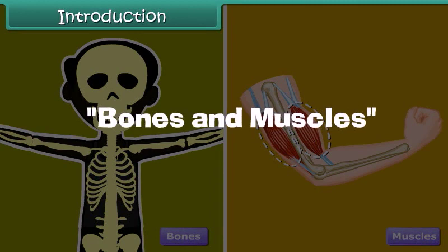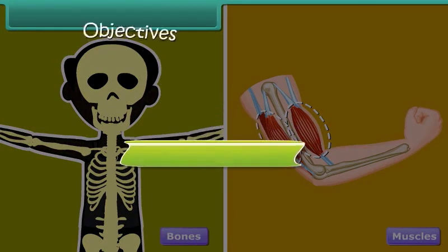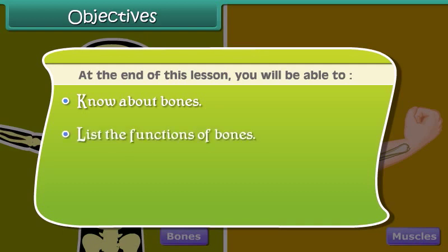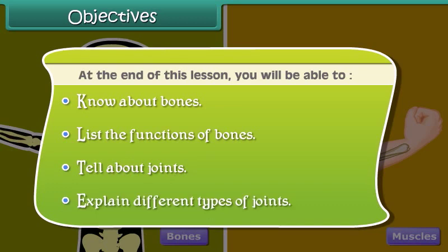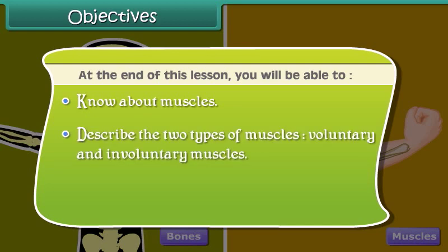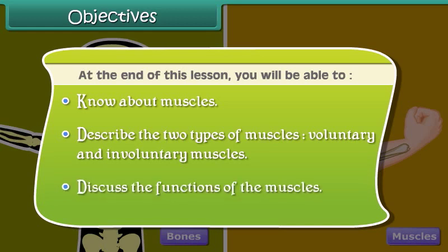Bones and muscles. At the end of this lesson, you will be able to: know about bones, list the functions of bones, tell about joints, explain different types of joints, know about muscles, describe the two types of muscles — voluntary and involuntary muscles, and discuss the functions of the muscles.